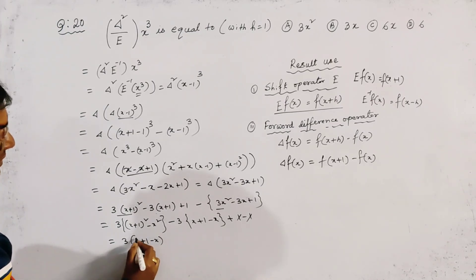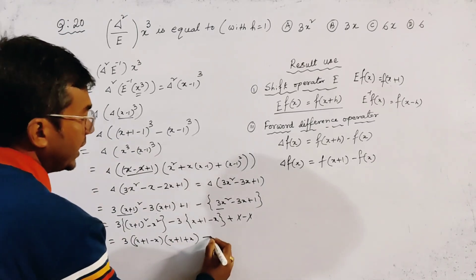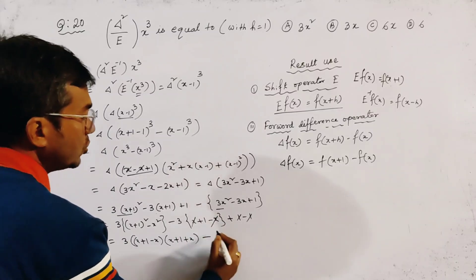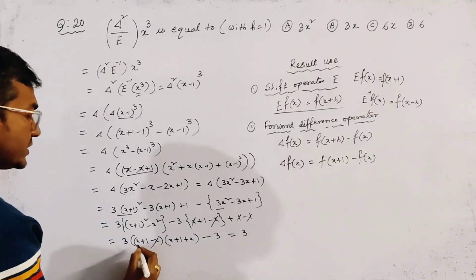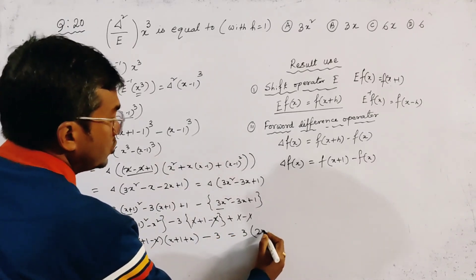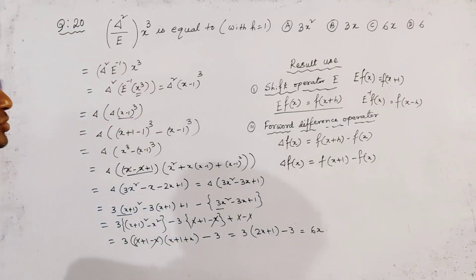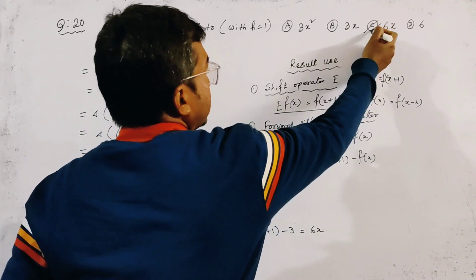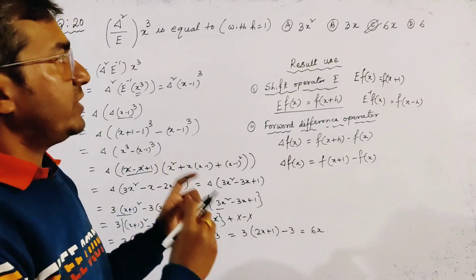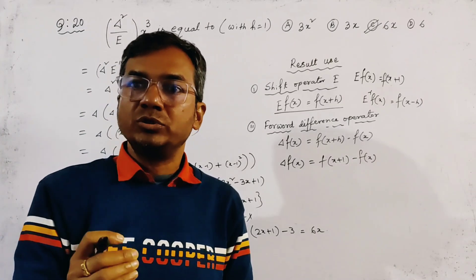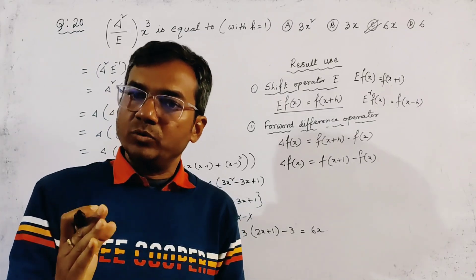So we get 6x, which means the correct option is option C. This is a straightforward problem using only the definitions of the shift operator and the forward difference operator. Thank you for watching.